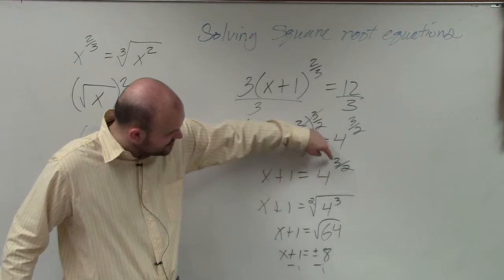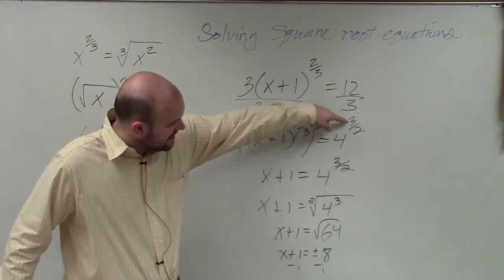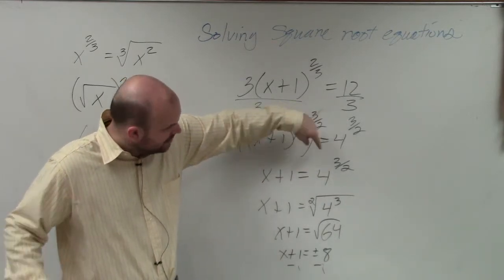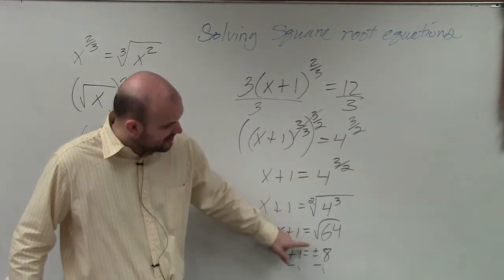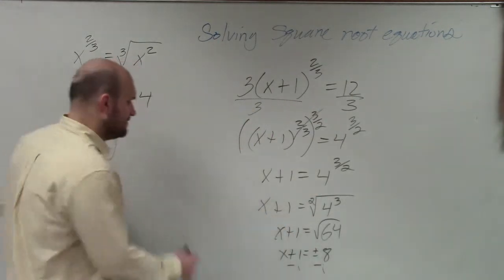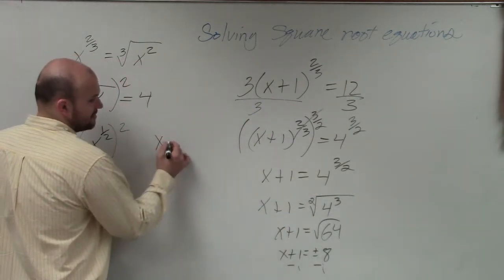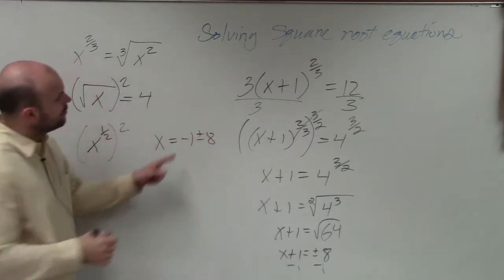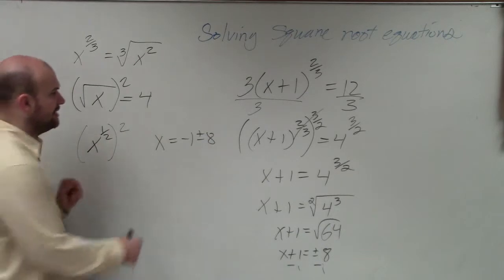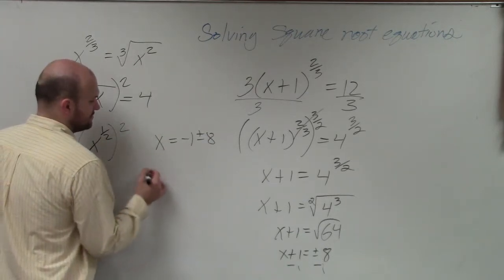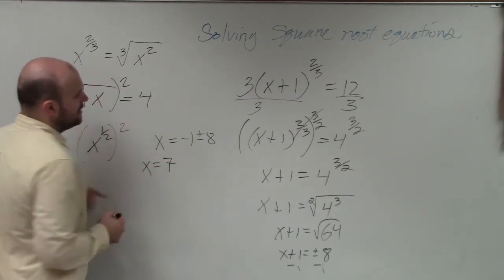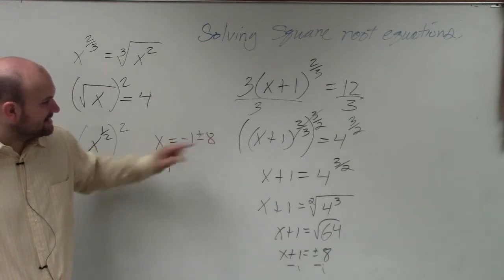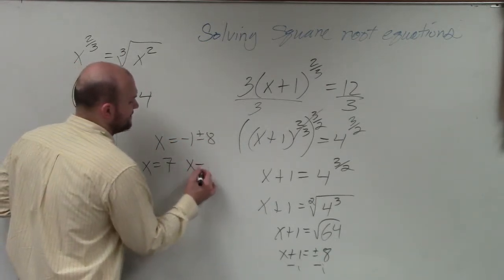When you introduce the square root, when you raise it to that power, you have to make sure you include the positive and the negative. So therefore, I have x equals negative 1 plus or minus 8. Well, negative 1 plus 8 is going to give you a 7. And negative 1 minus 8 is going to equal a negative 9.